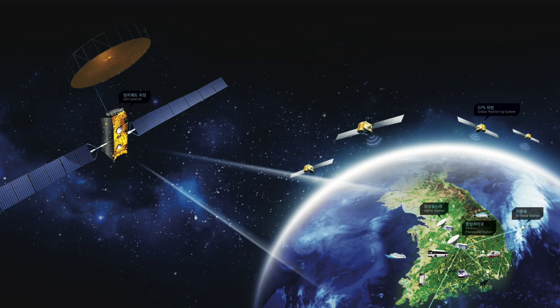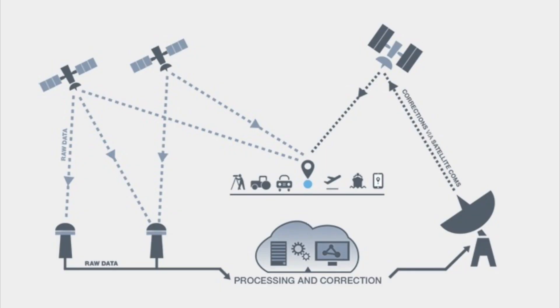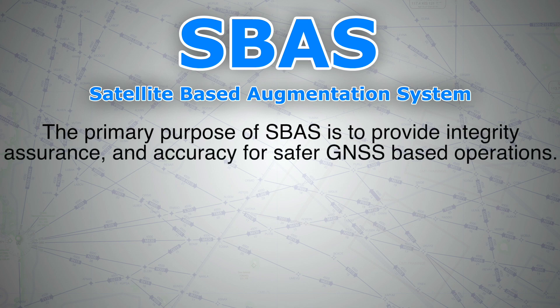A satellite-based augmentation system, SBAS, is a wide area differential GNSS signal augmentation system which uses a number of geostationary satellites able to cover vast areas to broadcast primary GNSS data, which has been provided with ranging integrity and correction information by a network of SBAS ground stations.